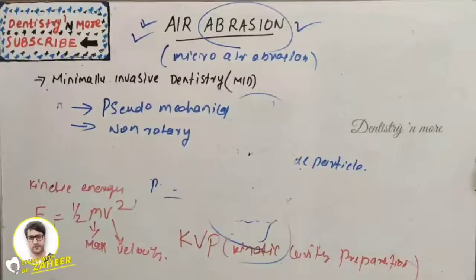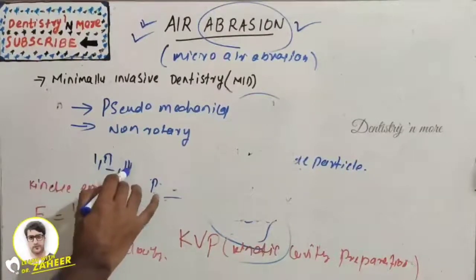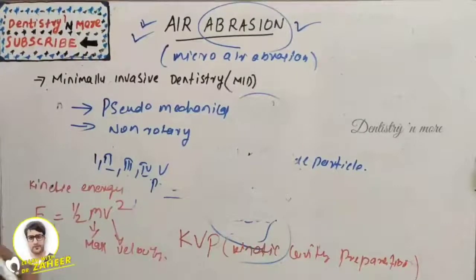It can be used in Class 1, 2, 3, 4, 5 cavity preparation, sealants and preventive resin restorations, repair of composites and porcelain especially the margin of veneers, removal of composite and amalgam - all these cases we can use this air abrasion technique.